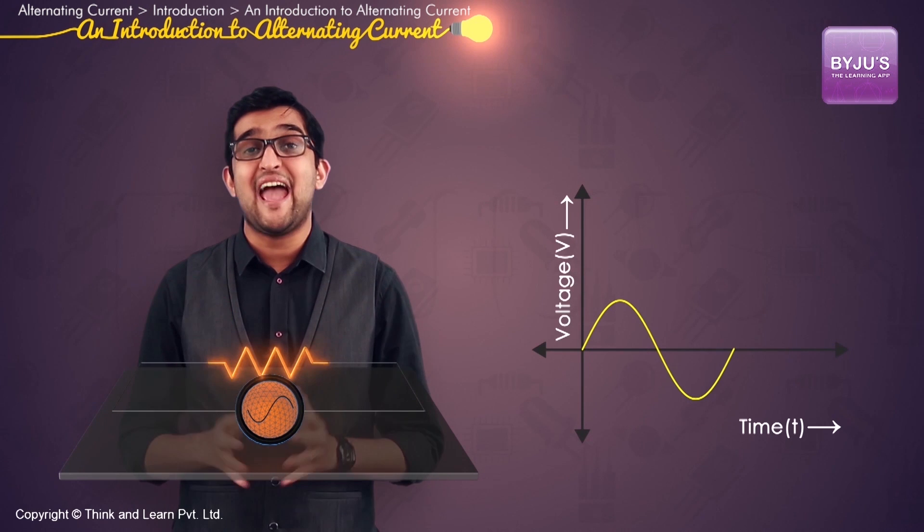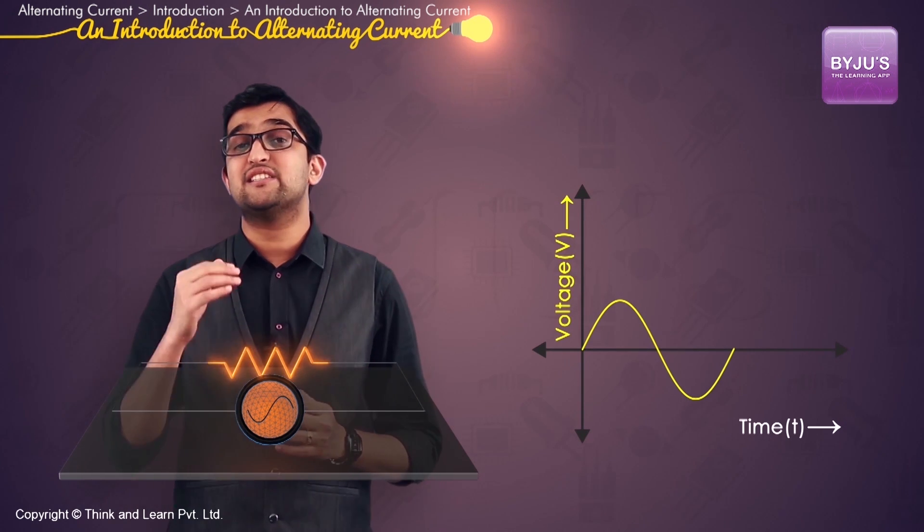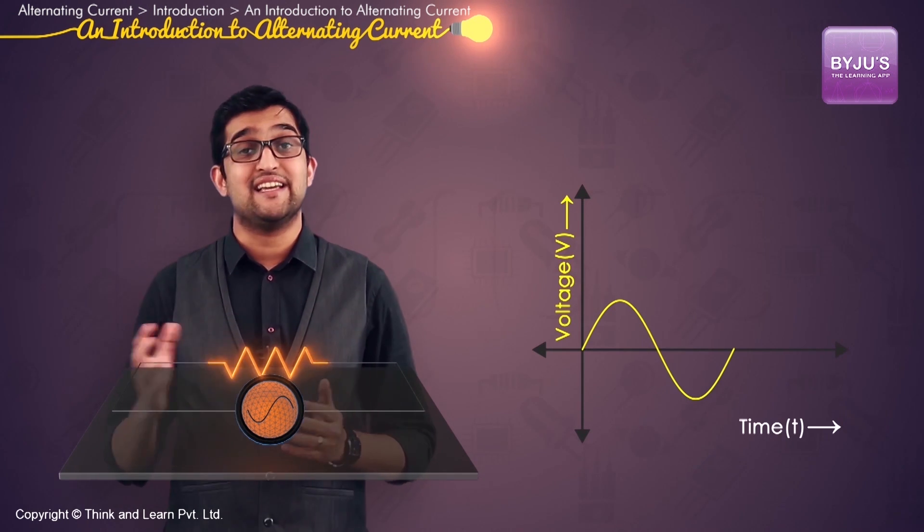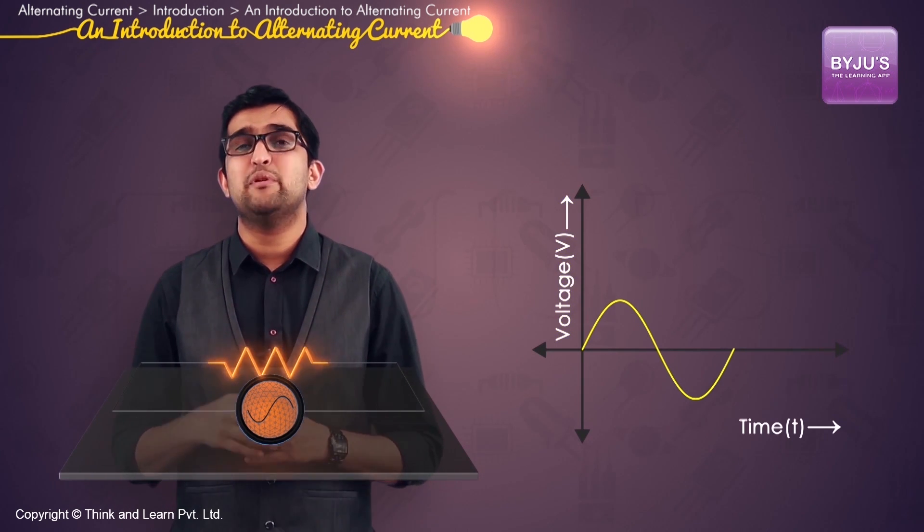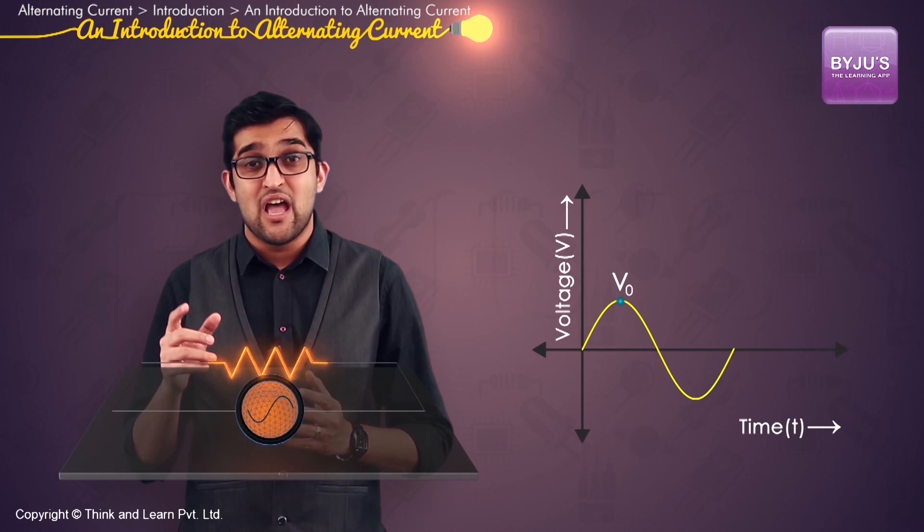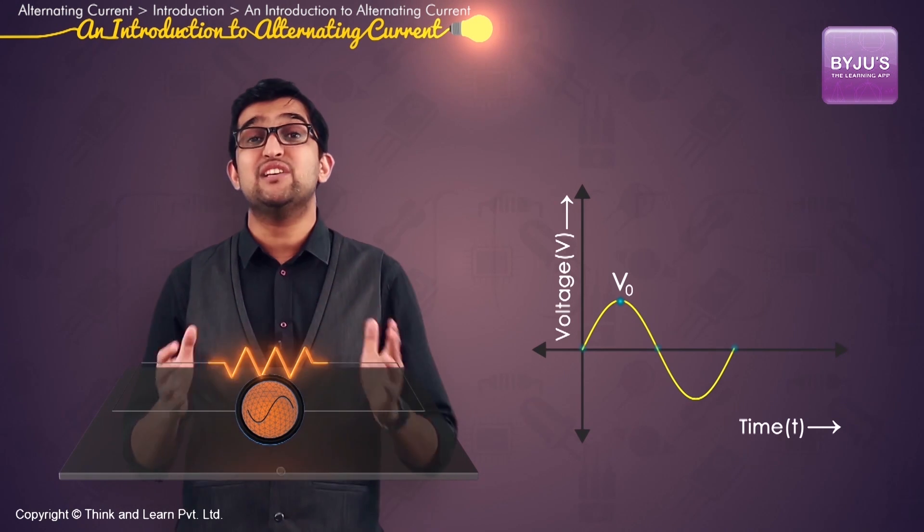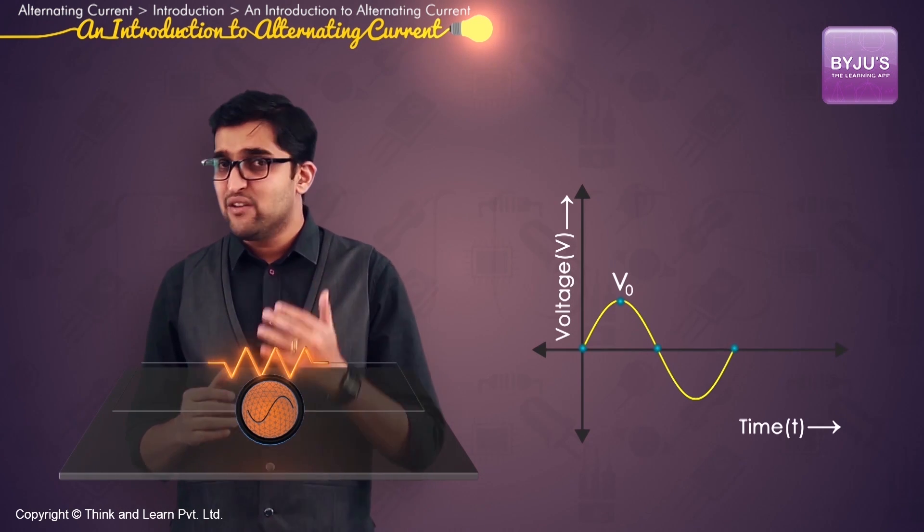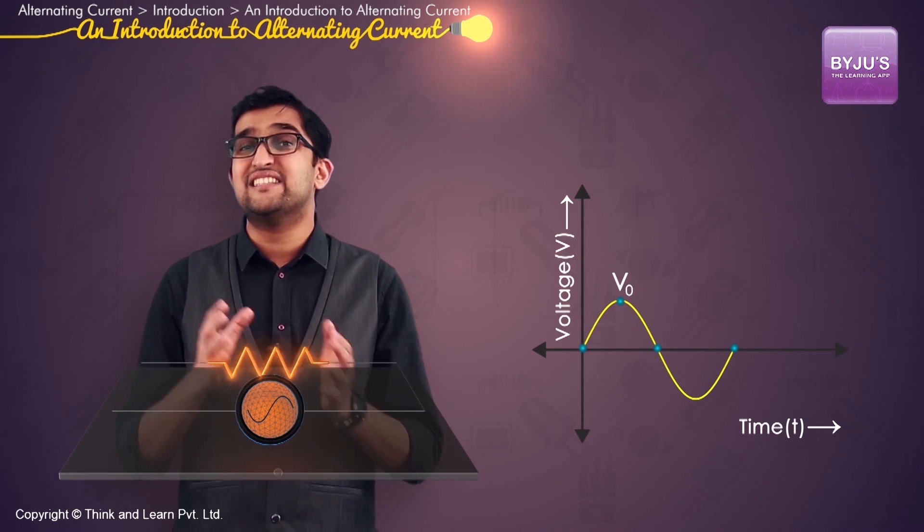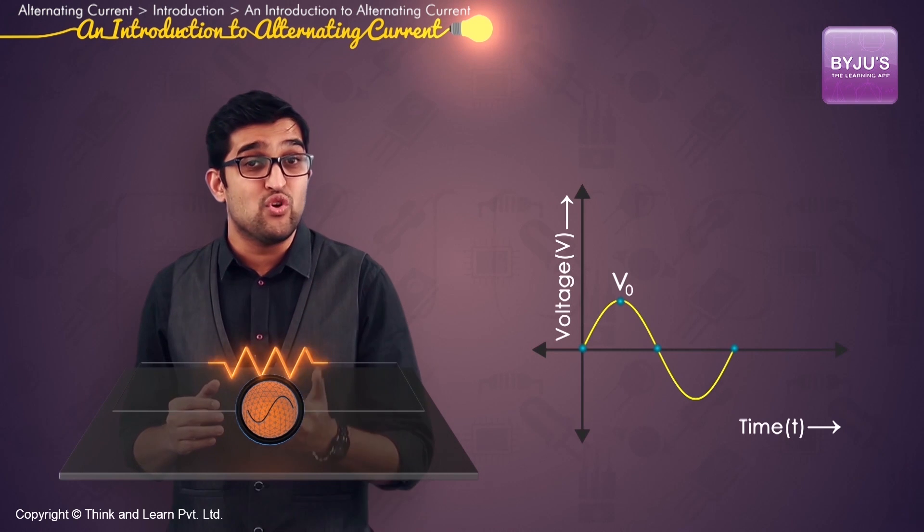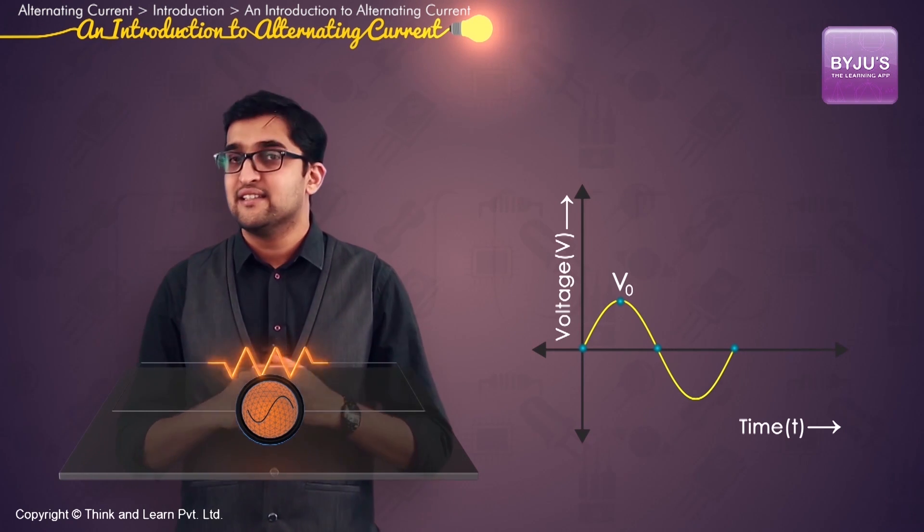As you can guess, the y-axis represents the instantaneous voltage or the instantaneous current. This instantaneous current or voltage will be maximum at the peaks of the sine wave and will be zero at the points where the sine wave touches the x-axis. And exactly at the same point, the polarity of the voltage or the direction of the current changes.